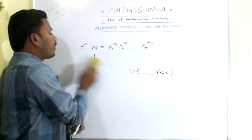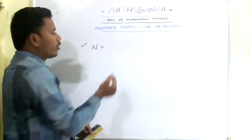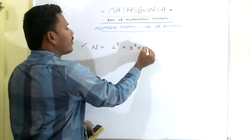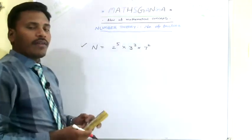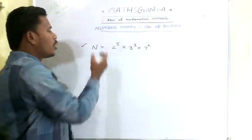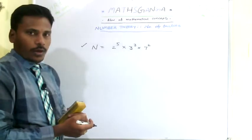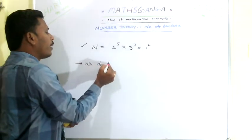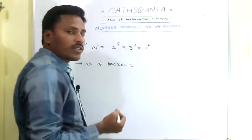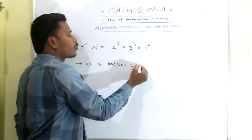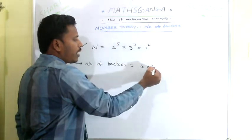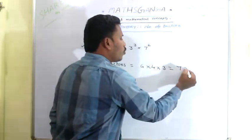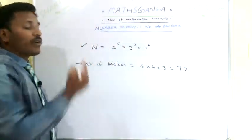For example, if we have a number n = 2^5 × 3^3 × 7^2, the number of factors is (5+1)(3+1)(2+1) = 6 × 4 × 3 = 72. Totally there are 72 factors for the given number.